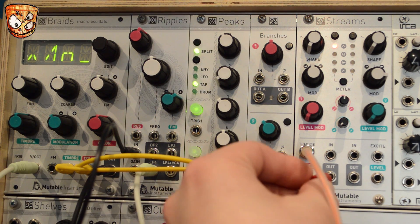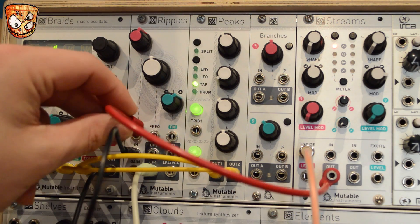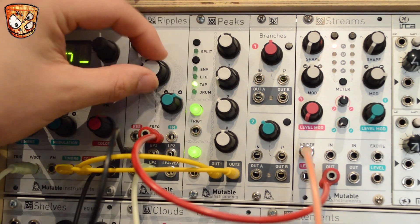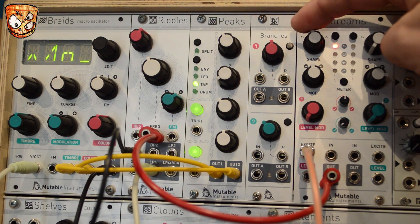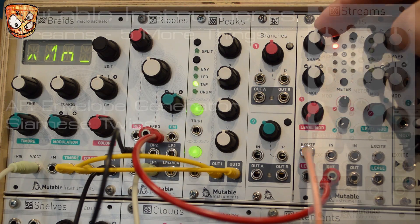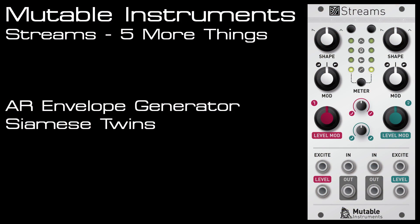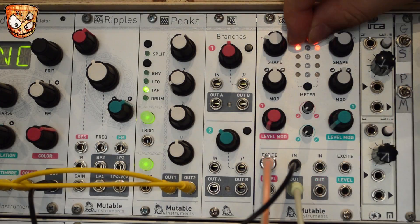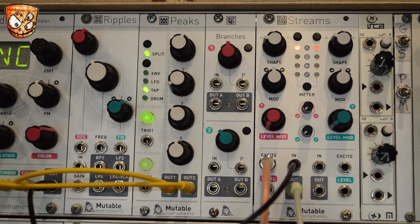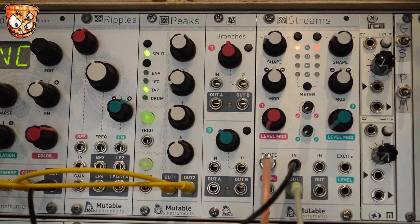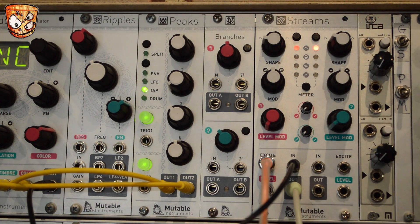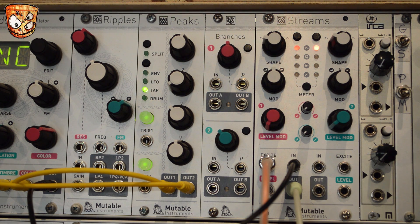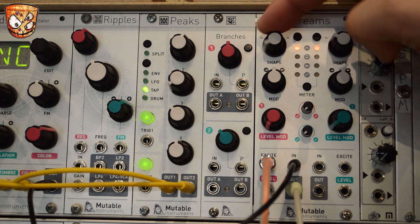Here I'm going to take it to control the cutoff on a Ripples filter — the sound is still coming from Braids. Sticking in this first additional mode, the AR envelope generator, we can also use Siamese twin mode to access more features and link the two channels of Streams. This is accessed by pressing and holding both channels together, giving attack control on channel 1's shape knob and release and sustain control on channel 2's shape knob.